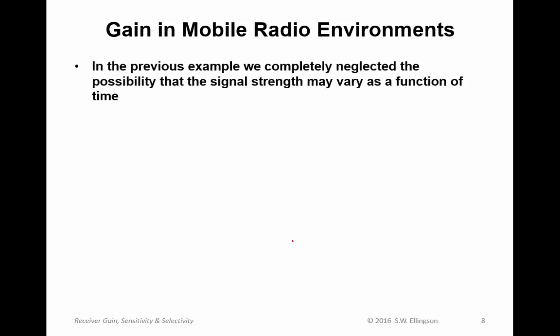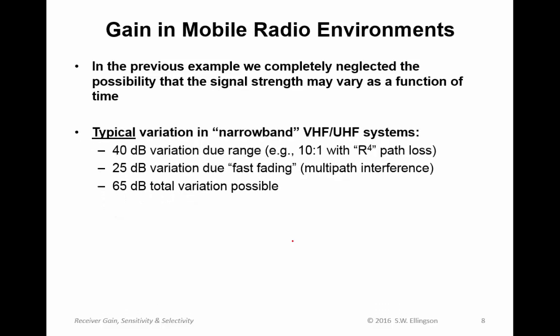Let's talk about gain in mobile radio environments. In the previous example, we completely neglected the possibility that signal strength may vary as a function of time. Yet we know that in narrowband VHF-UHF radio systems, which account for most radio systems including cellular, there's tremendous variation in signal level. For example, 40 dB variation due to range. If you assume path loss varies as R to the fourth and range varies by a factor of 10 to 1, you end up with 40 dB variation just due to range.